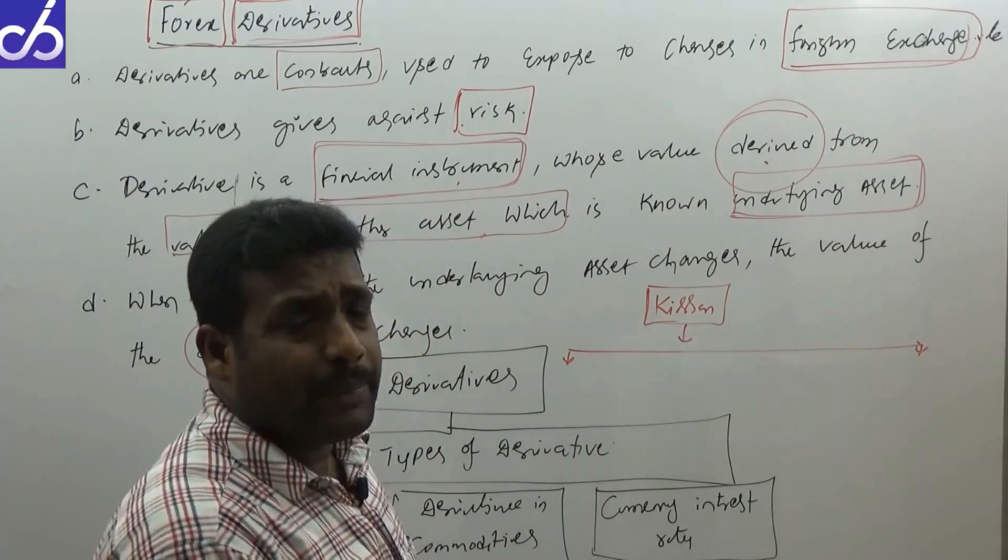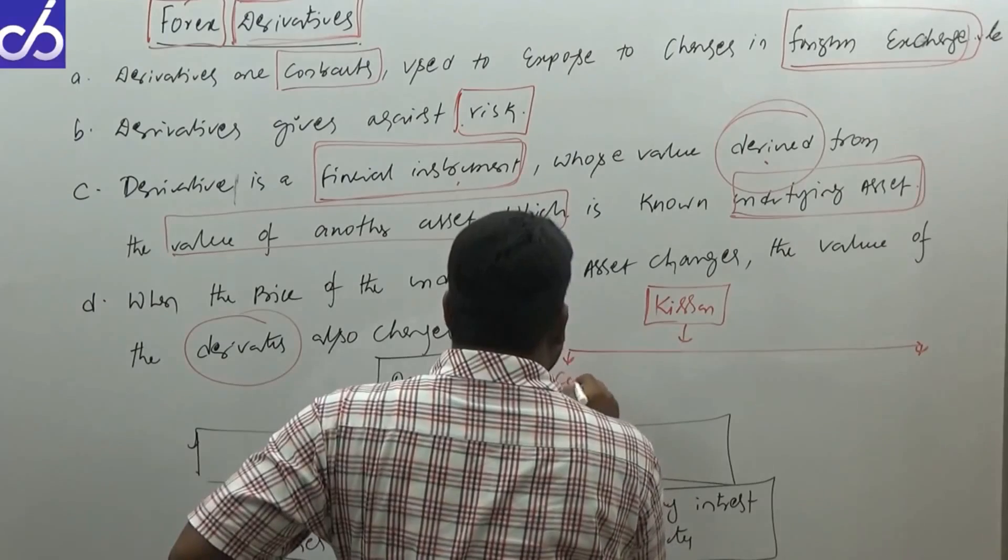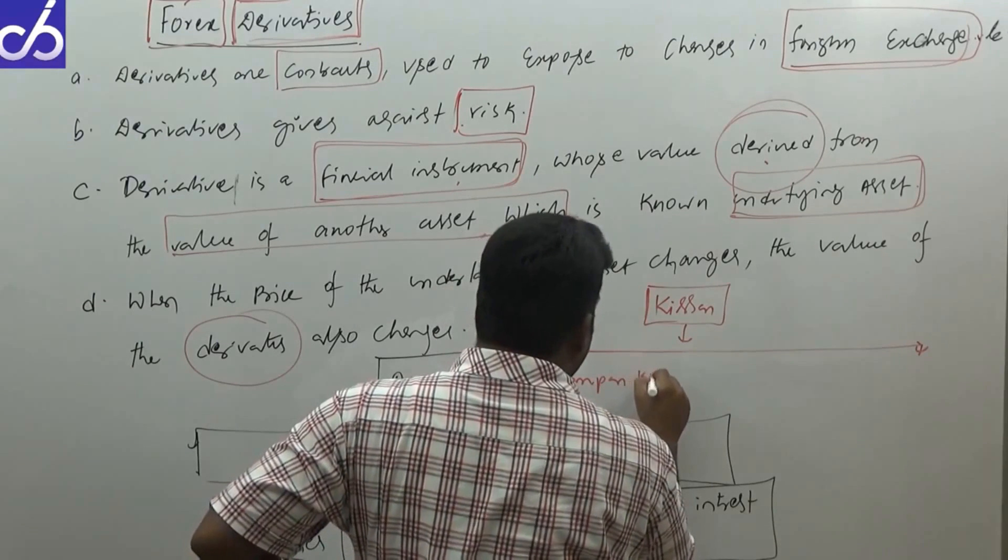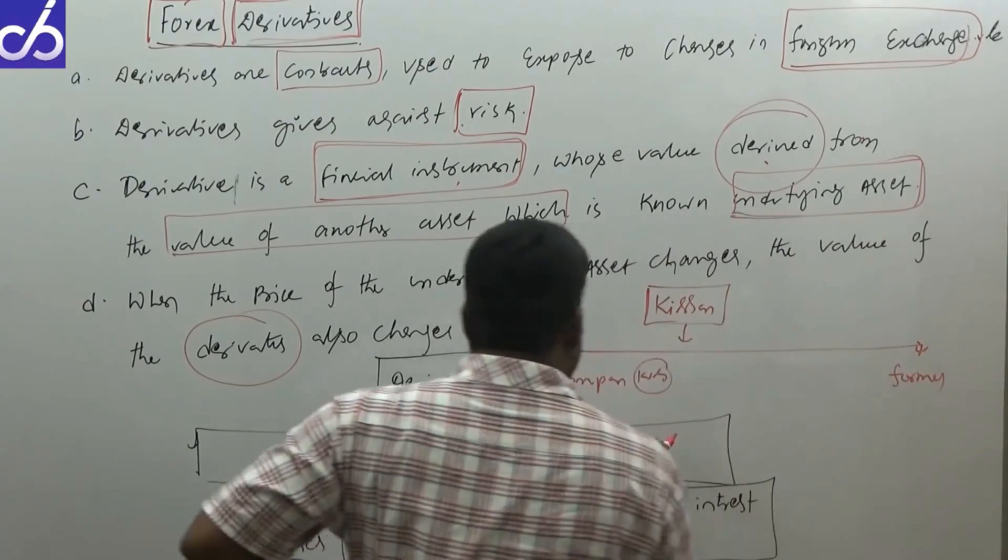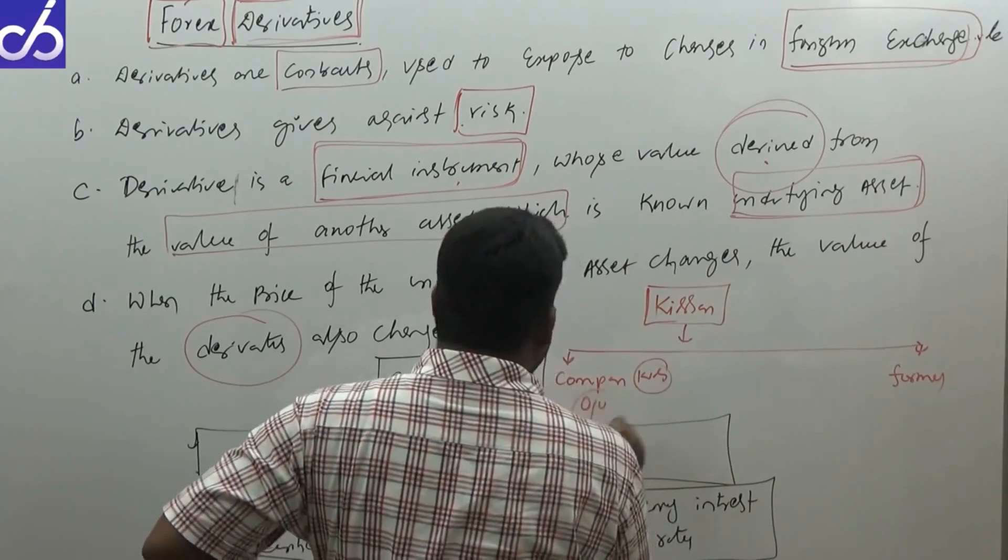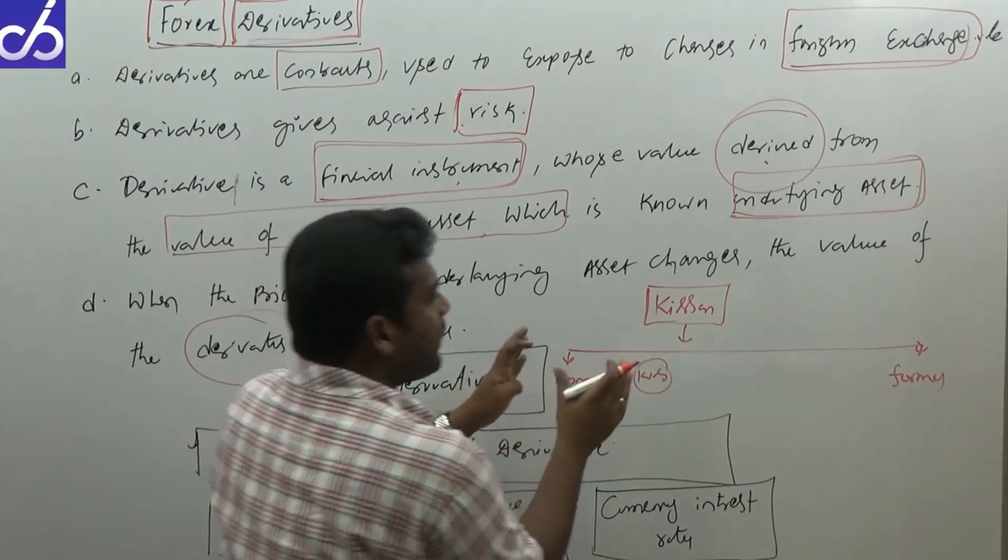Tomato ketchup is produced by Kissan company. Here there is a farmer. This will help you better understand this theoretical part.